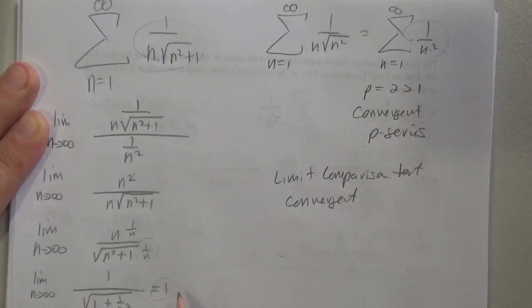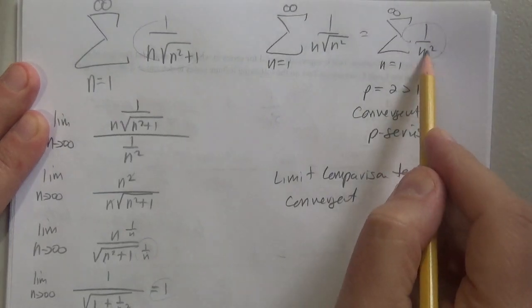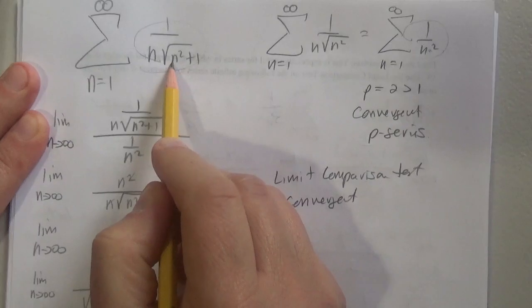Notice that my limit is equal to 1. As long as I don't get 0 or infinity, I know I've chosen wisely that this is an appropriate series to compare to this one here.